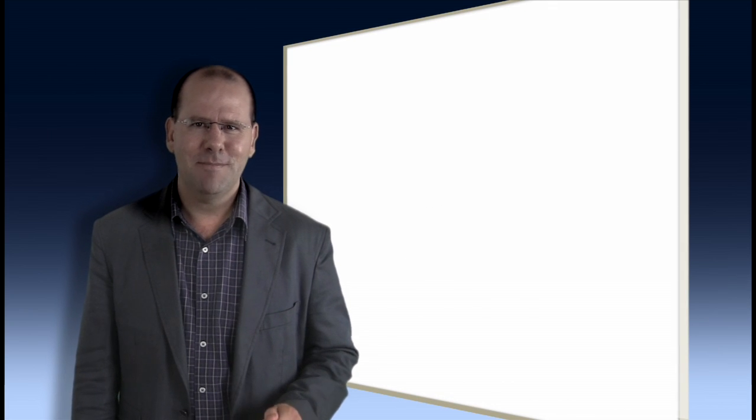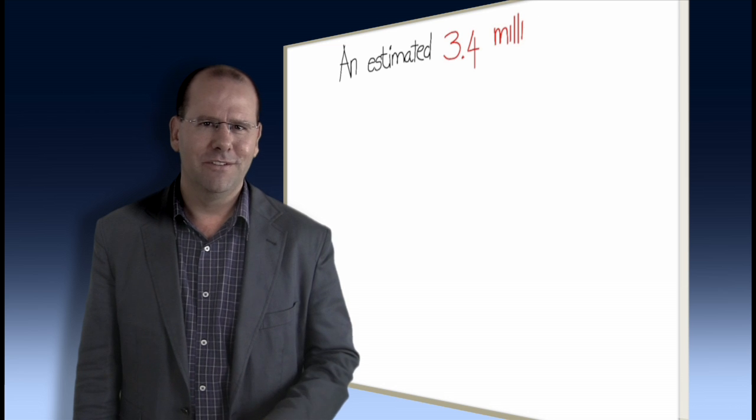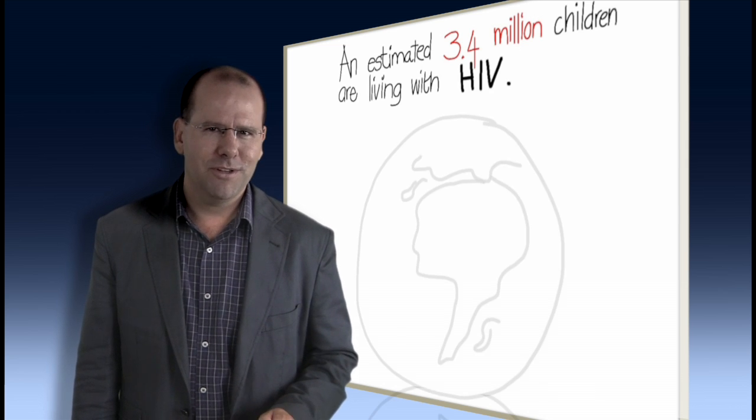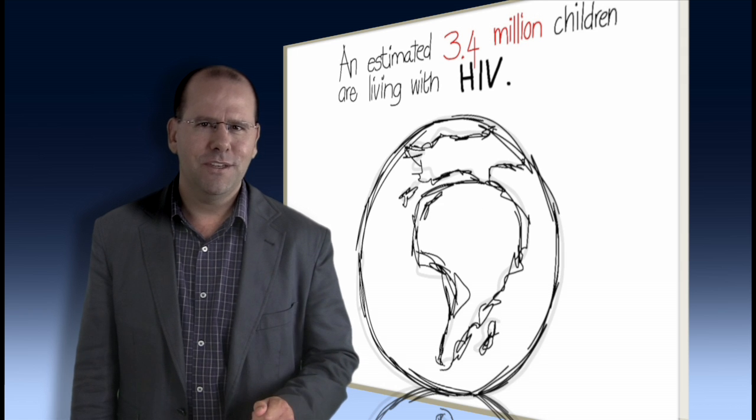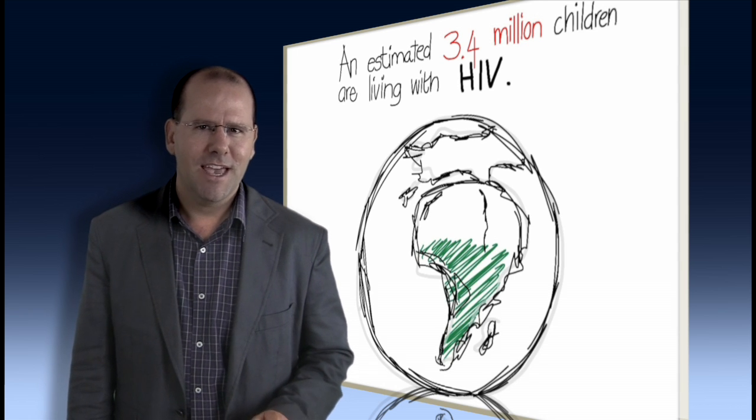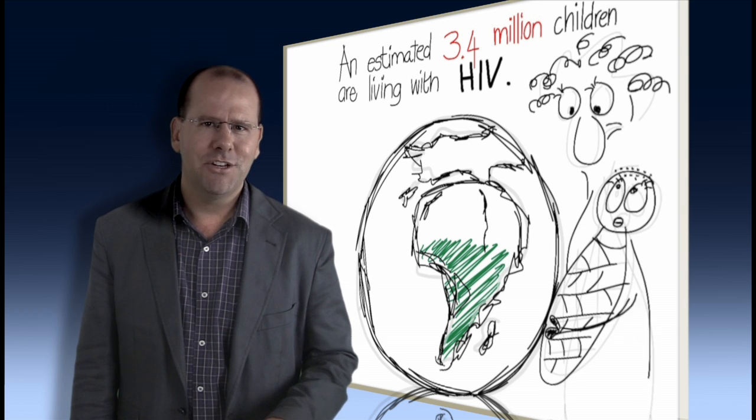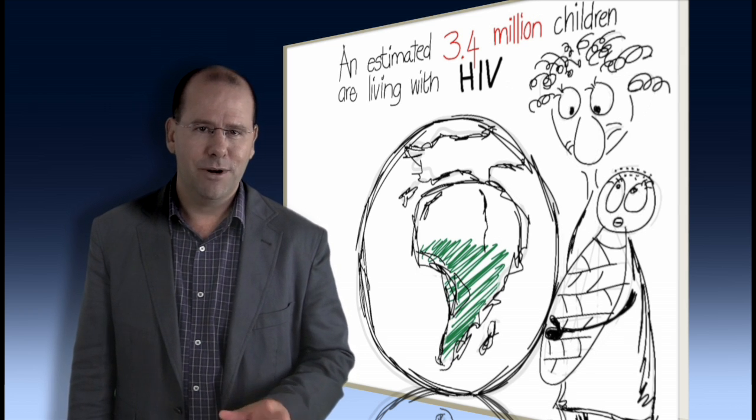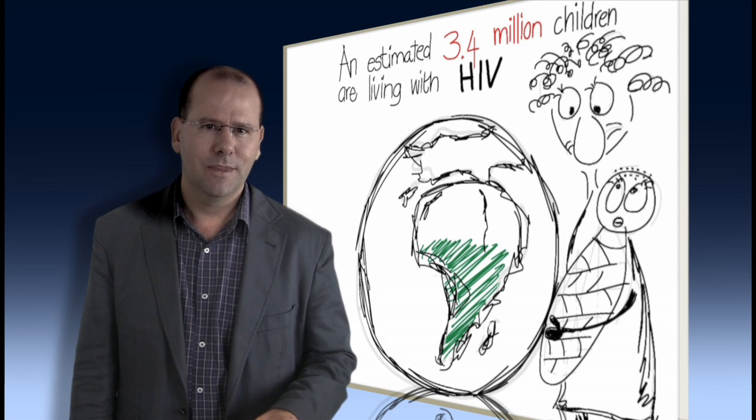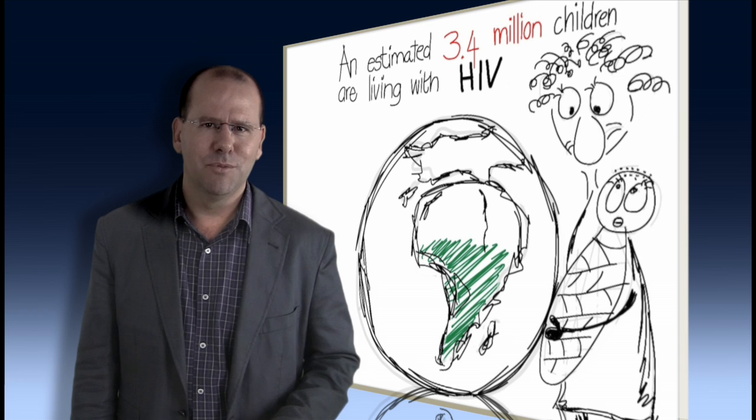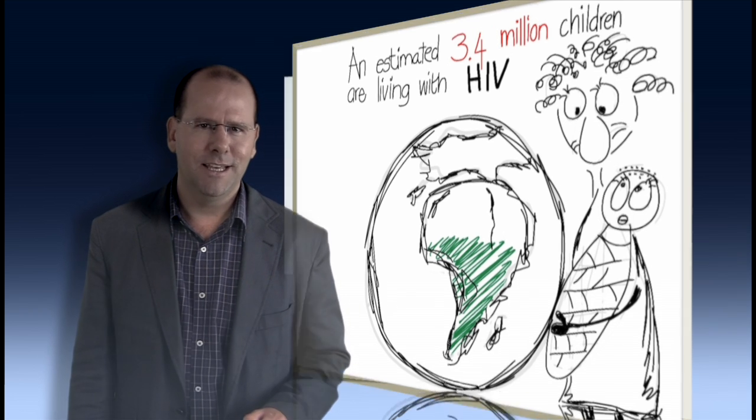Fact number seven. An estimated 3.3 million children are living with HIV. According to 2011 figures, most of these children live in sub-Saharan Africa and were infected by their HIV positive mothers during pregnancy, childbirth, and breastfeeding. Over 900 children become newly infected with HIV every single day.